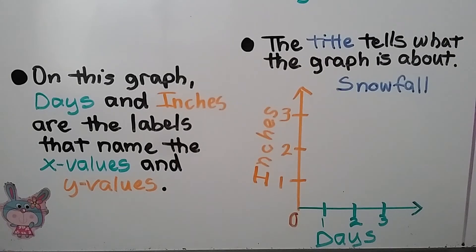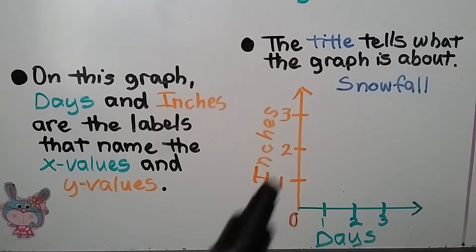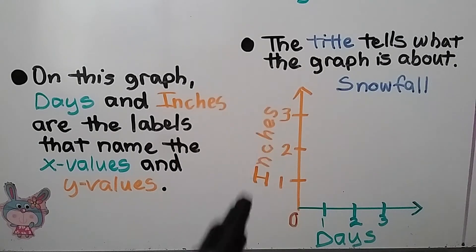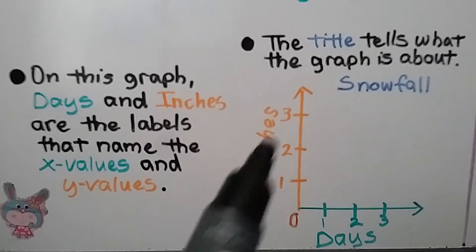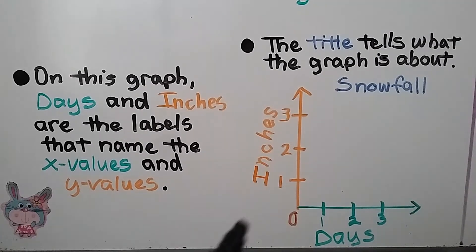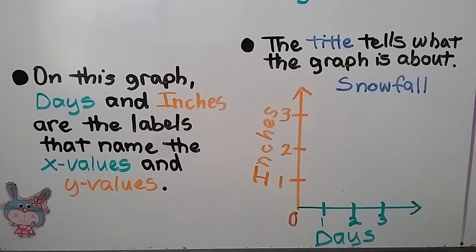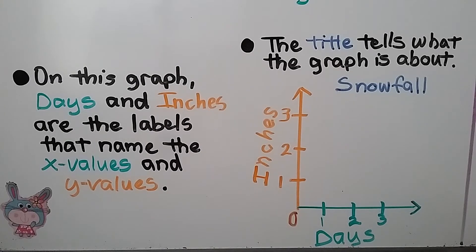On this graph, days and inches are the labels that name the x and y values, and the title tells what the graph is about — it's about snowfall.